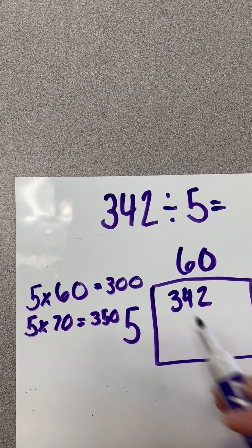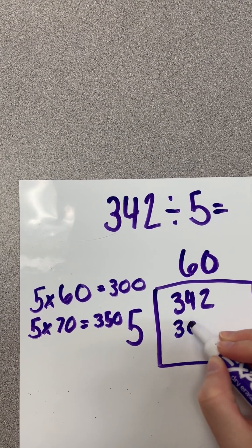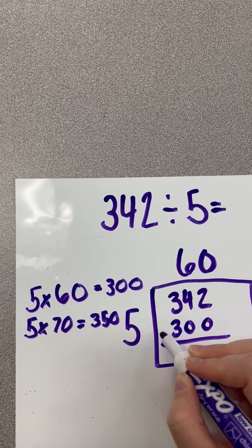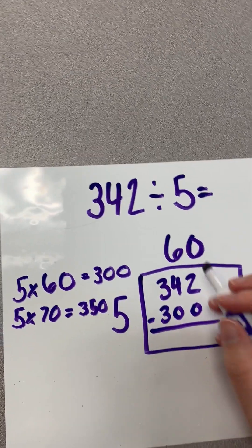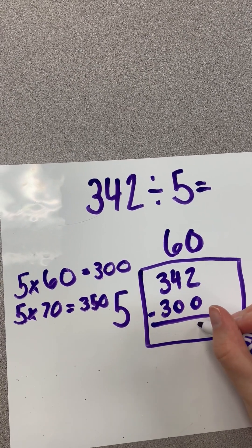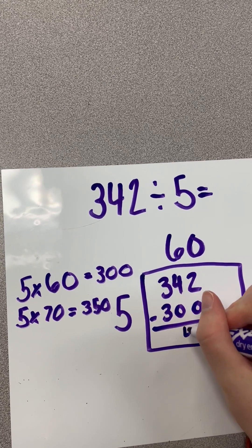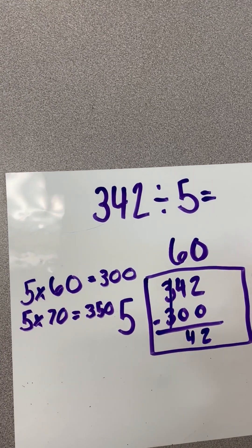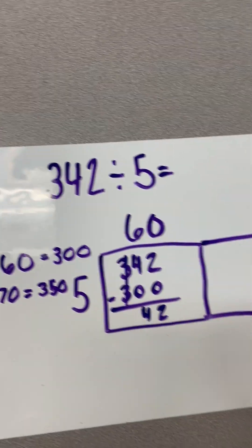So, 60 times 5 is 300. That means that I've used up 300 of 342, which leaves me with, when I do the math, 42. So, I need to make sure I get rid of that 42 as well.